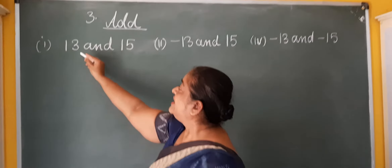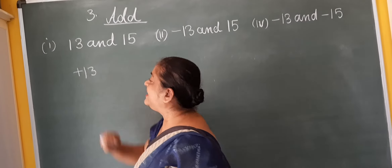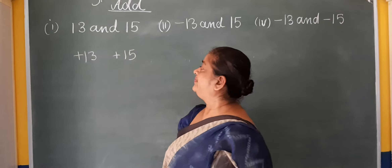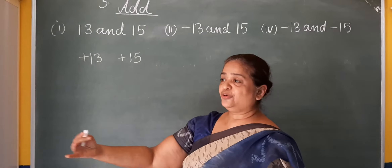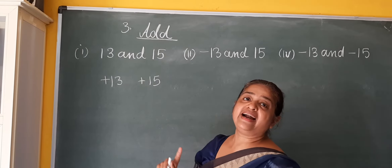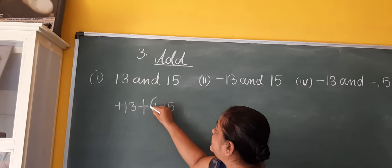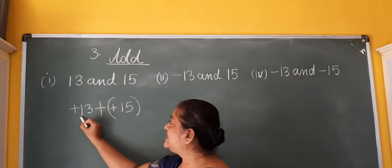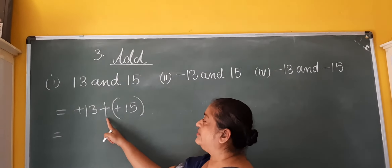Let us see the first question. Thirteen — when it is written without a sign, that means it is plus thirteen. When there is no sign given, it is a positive number. And fifteen. So these are our two contestants of the match: plus thirteen and plus fifteen. The rule is that we have to add. What is the rule here? Plus — that means you have to add. Two signs are coming close, so I will put this in a bracket. We are going to add plus thirteen and plus fifteen.